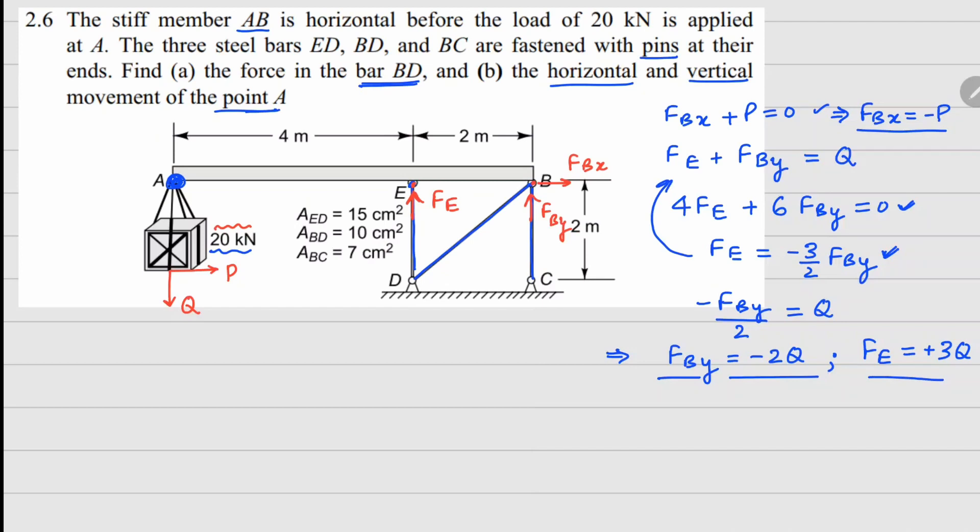These are the forces that are present on bar AB. Now if I look at your truss structure, these reactions will be present on this truss member in exactly opposite direction. So Fe goes here, your FBx goes there, and your FBy goes in this way. We have already got the values of these.